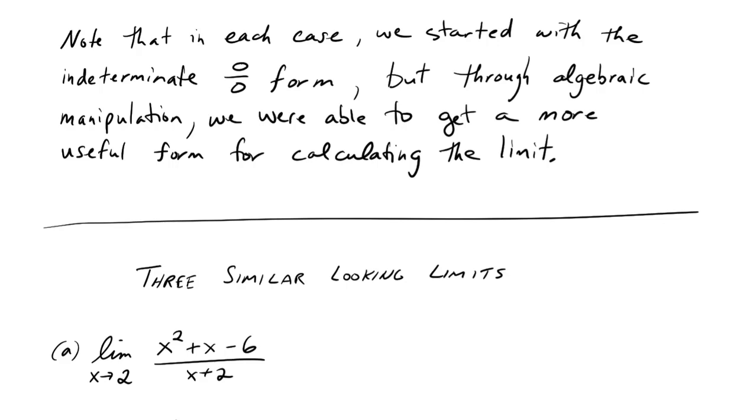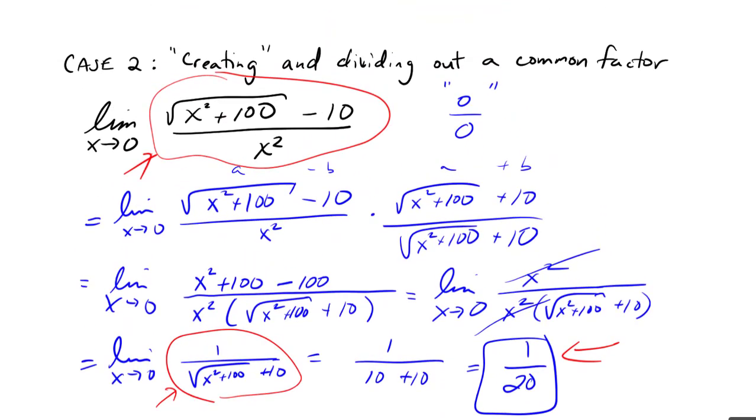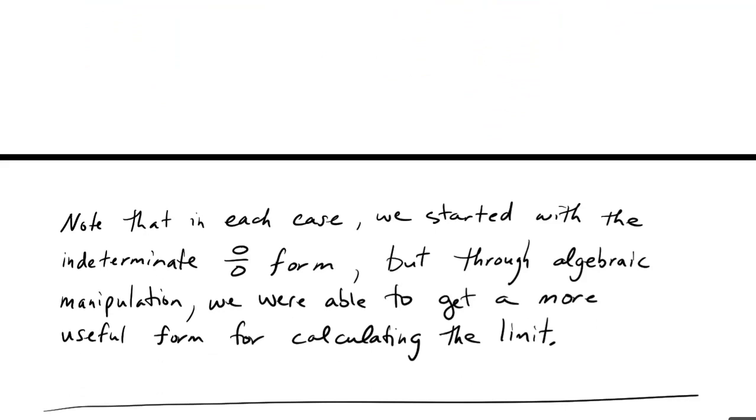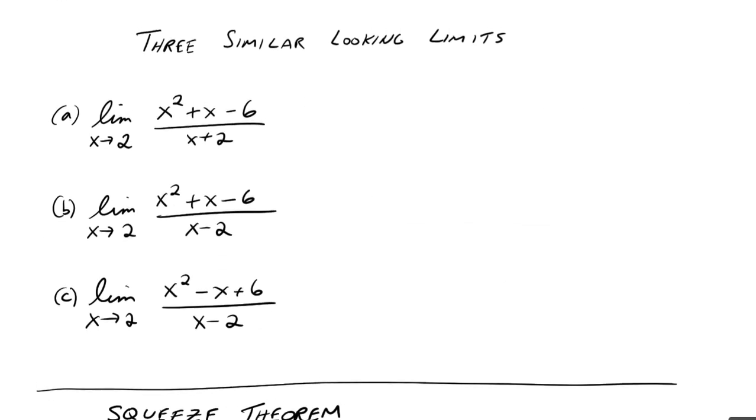In each of those previous examples that we did, the one where we factored out an x minus 2 and evaluated, and the one where we created the factor of x squared and got it out, each one of those cases started having the 0 over 0 indeterminate form. But through algebraic manipulation, we were able to get a more useful form for calculating the limit. We need to let the problem take us to where it needs to go. That's the point of these three examples here—they look very similar, and you could easily mistake one of these for the other.